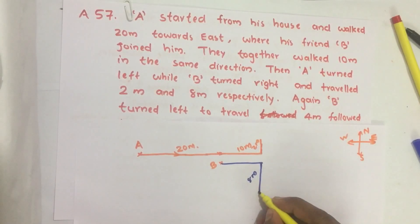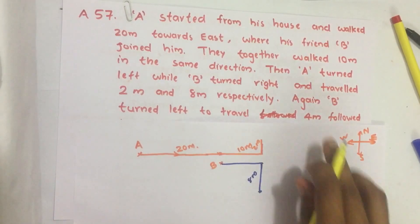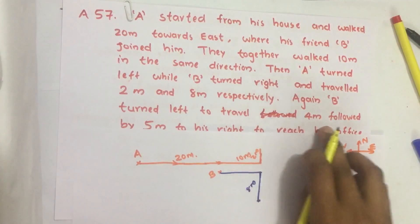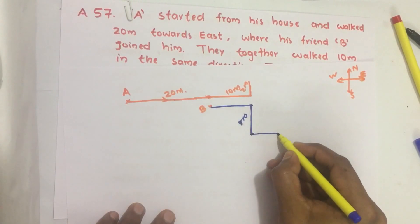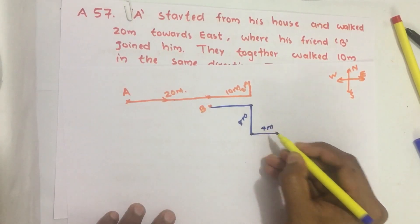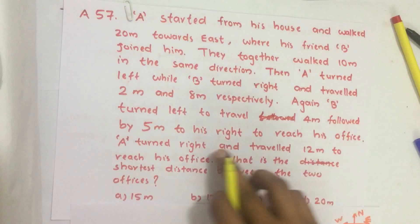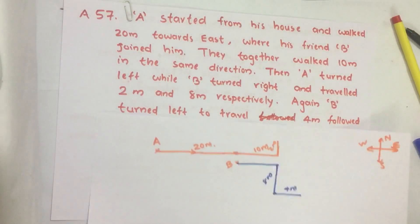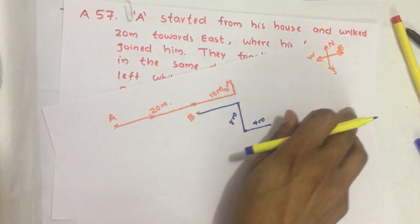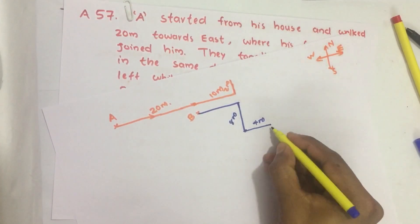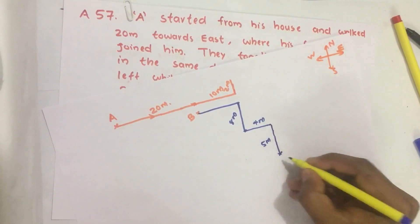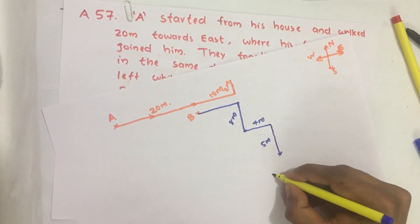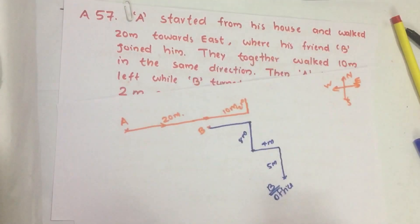Then after that B turned his left and traveled 4 meters. From there he turned to his right and traveled 5 meters. If he is walking like this, his right is in this direction and he traveled 5 meters. Finally he reached office. So office of B is here.